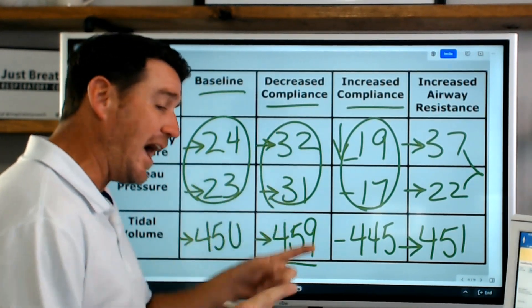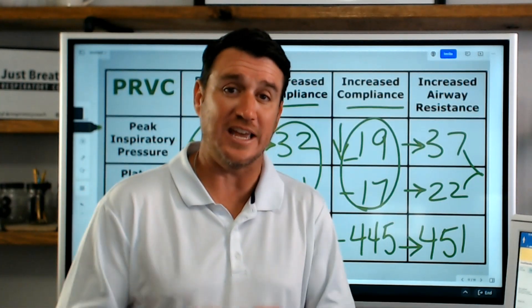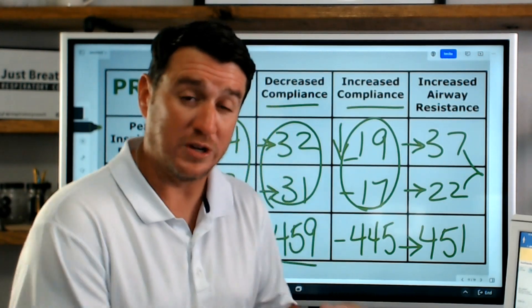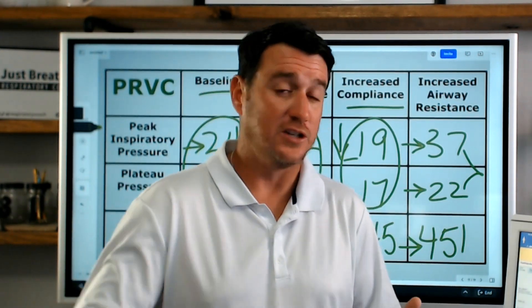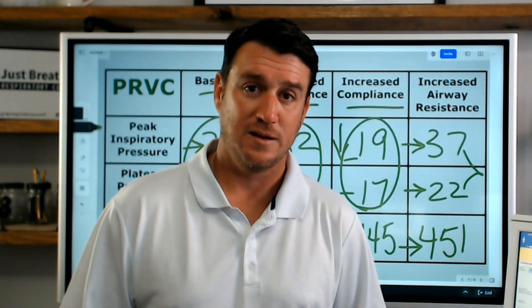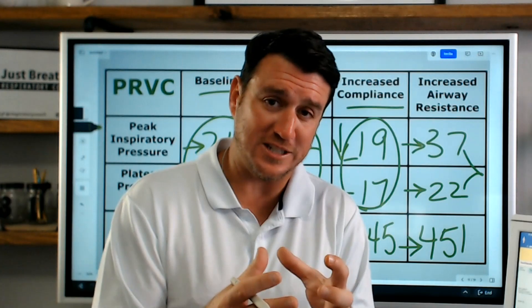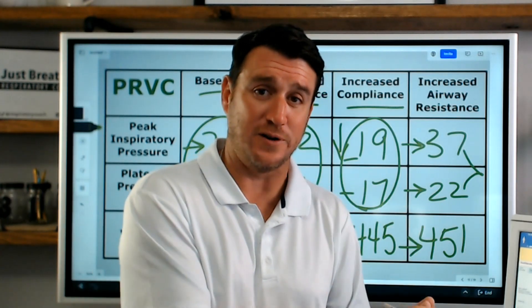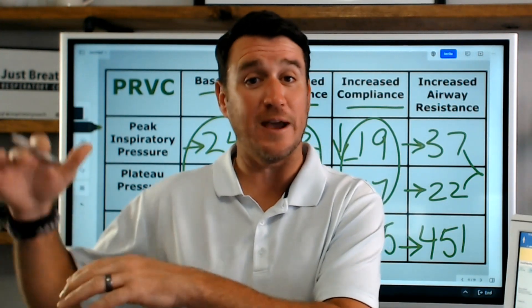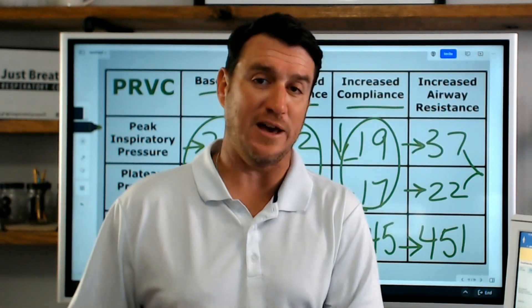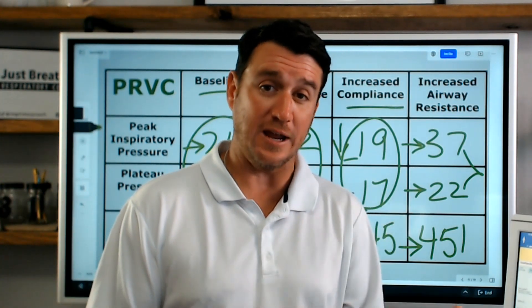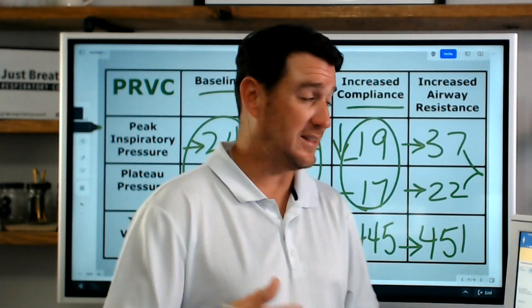what we recognize is that how do we recognize changes in compliance and resistance in a mode such as PRVC, which on the Draeger is auto flow. Some call it VC plus, some call it V sync, some call it PRVC. They're all the same thing. They target a tidal volume, but they use pressure to regulate where that pressure is. So they regulate the pressure to achieve that volume. So it's kind of a blended mode of volume control and pressure control, kind of gets confusing, but that's what it is.